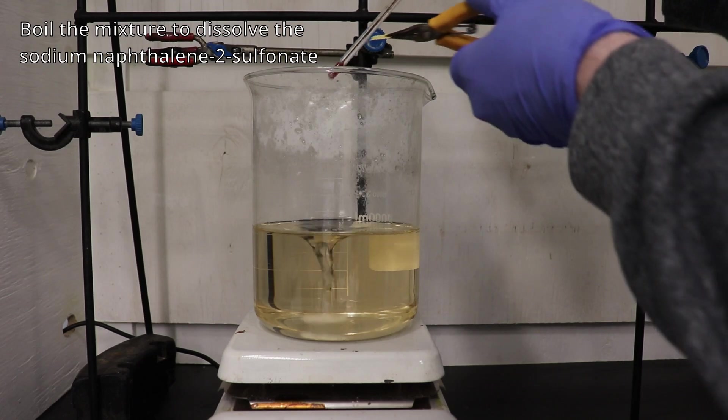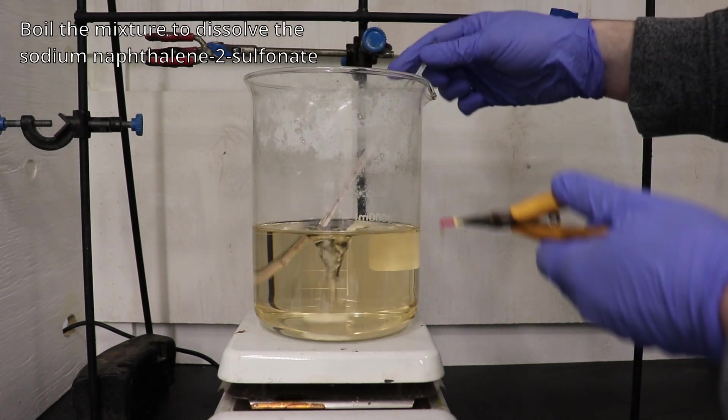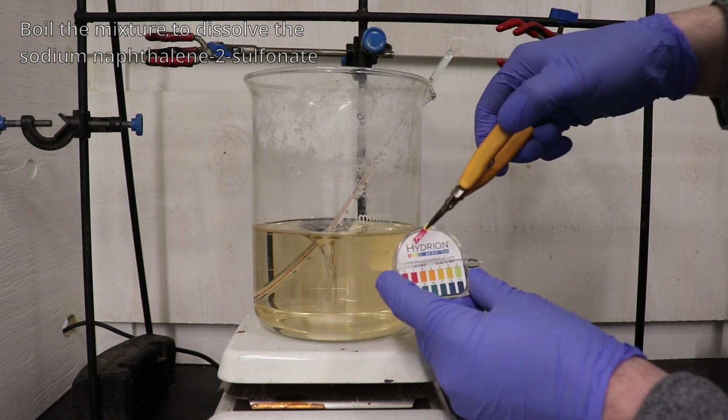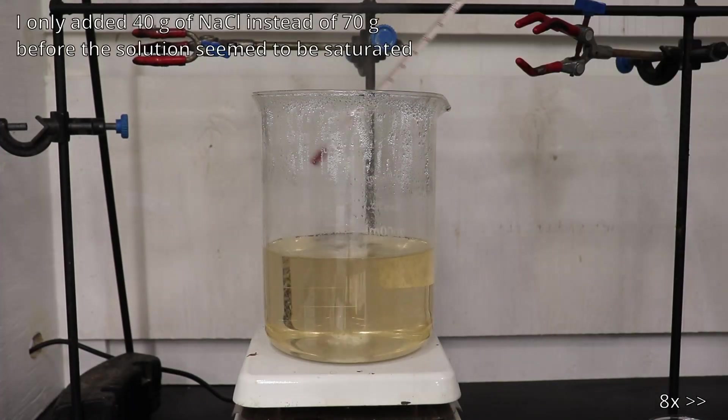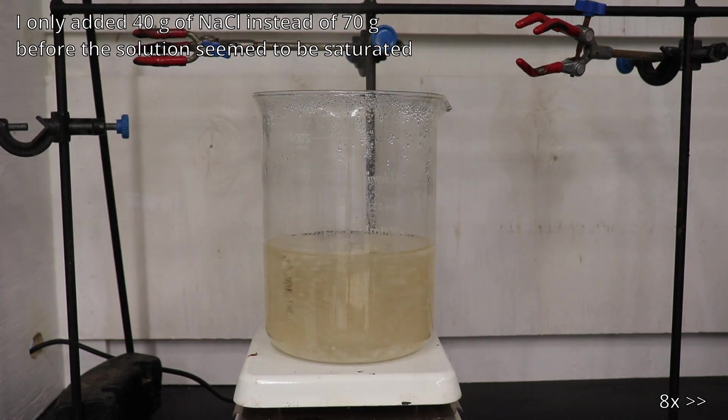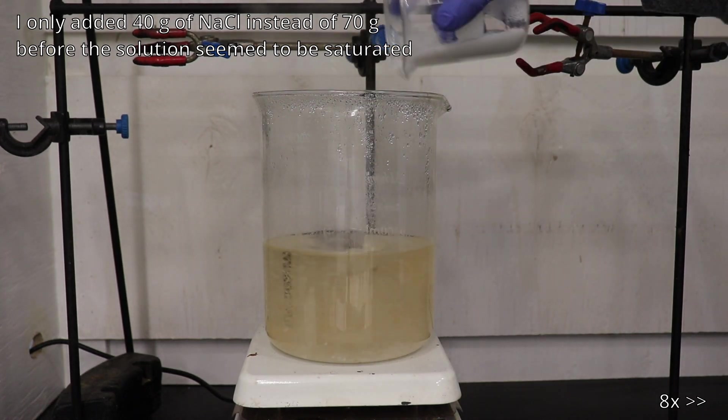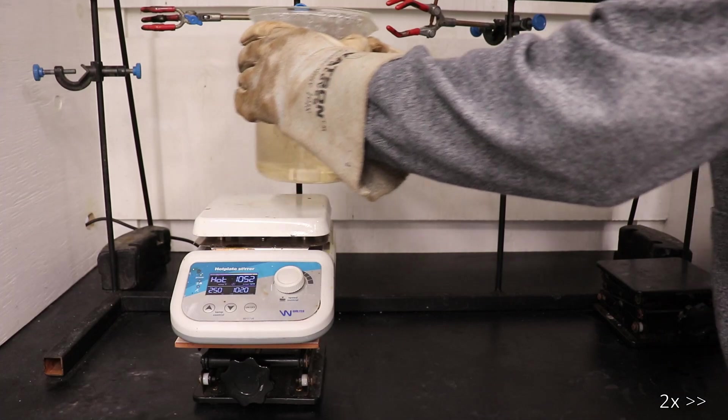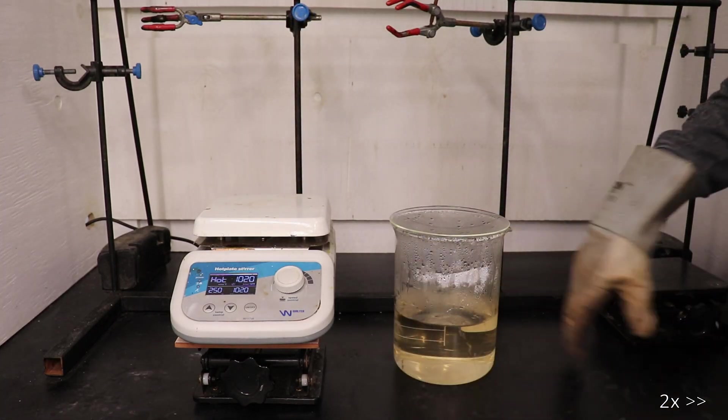The solution is then heated, redissolving the sodium naphthalene 2-sulfonate. Then 70 grams of sodium chloride is added, which decreases the solubility of the sodium naphthalene 2-sulfonate by the common ion effect. The solution is then removed from the heat to cool and crystallize.